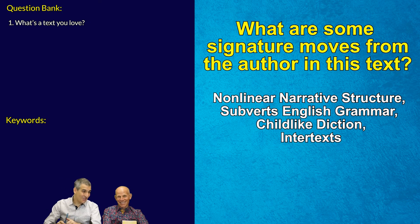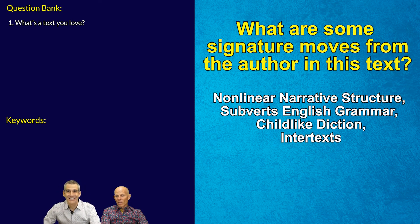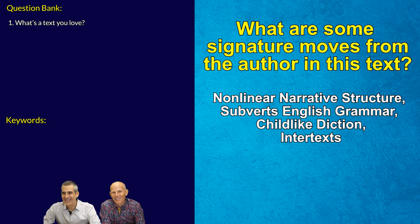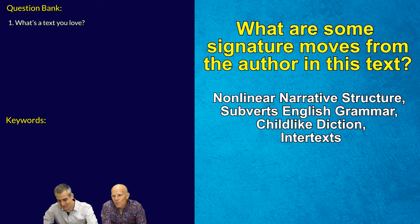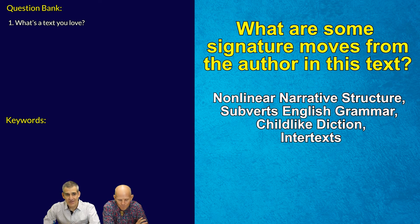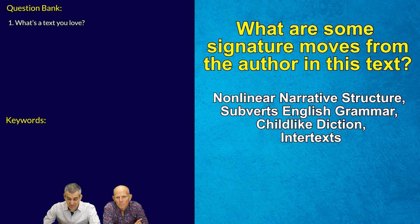My fourth signature move is the way she uses intertext. An intertext is more than just an allusion — it's a reference to a literary work that's really integrated into the narrative. So, starting with features rather than ideas, the things that make Arundhati Roy unique in this text are: nonlinear structure, use of grammar and subverting its rules, childlike diction, and intertextuality.